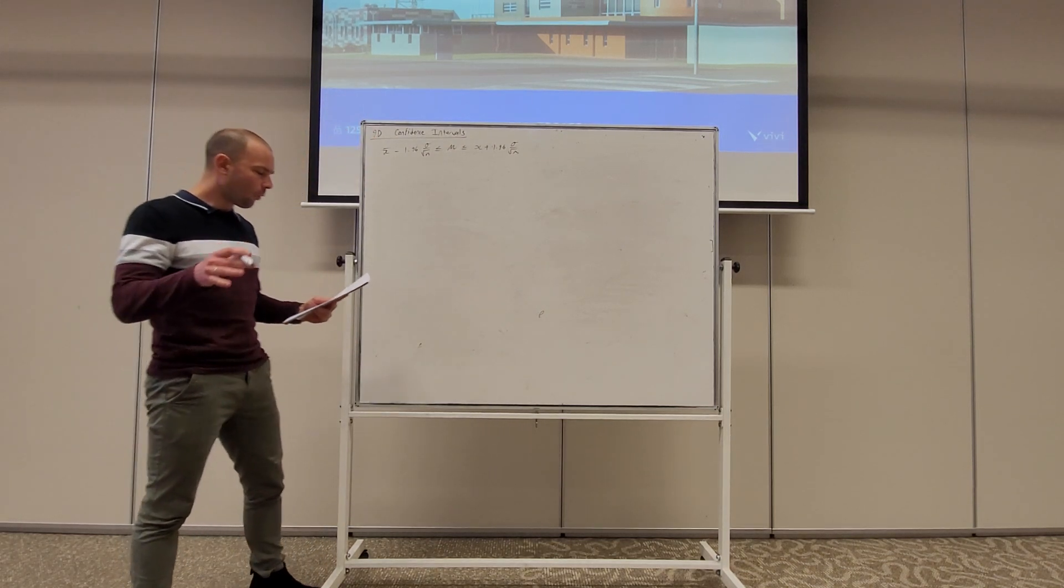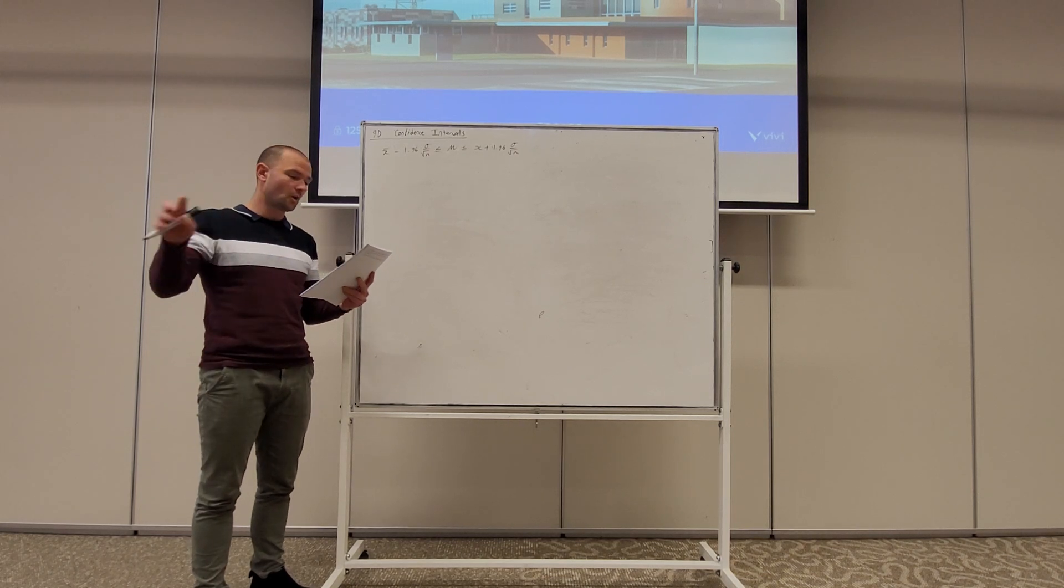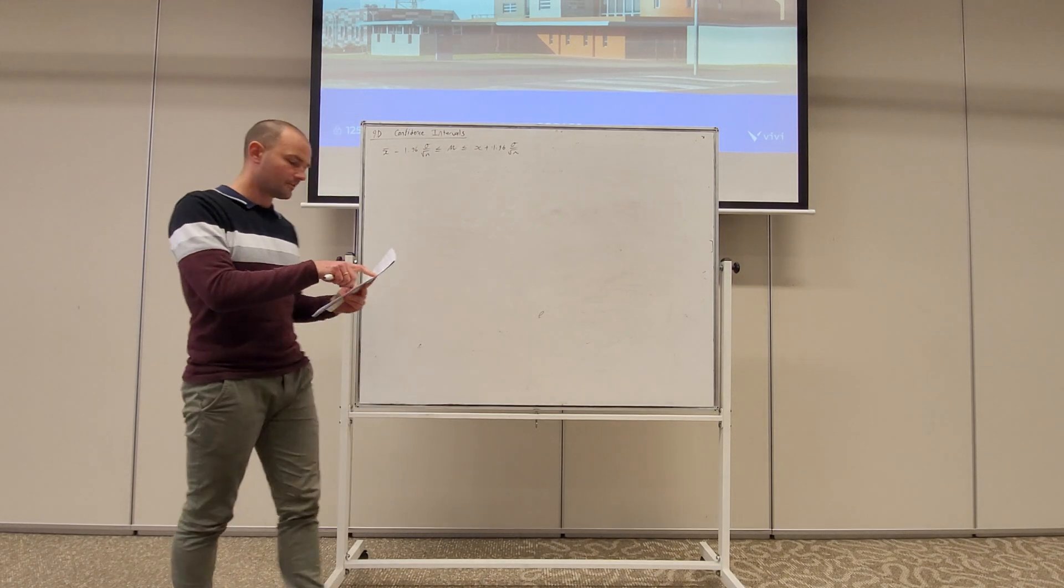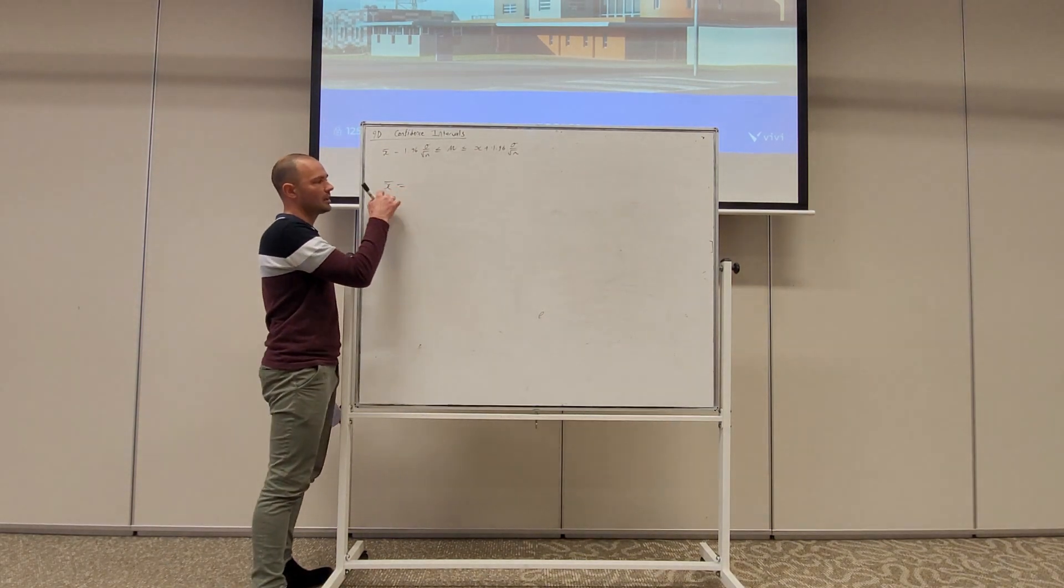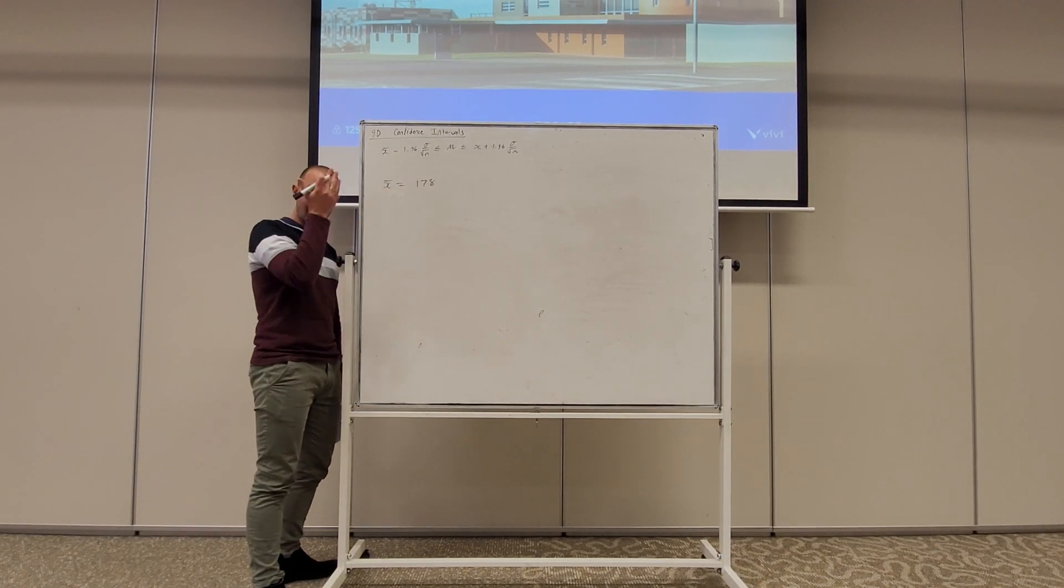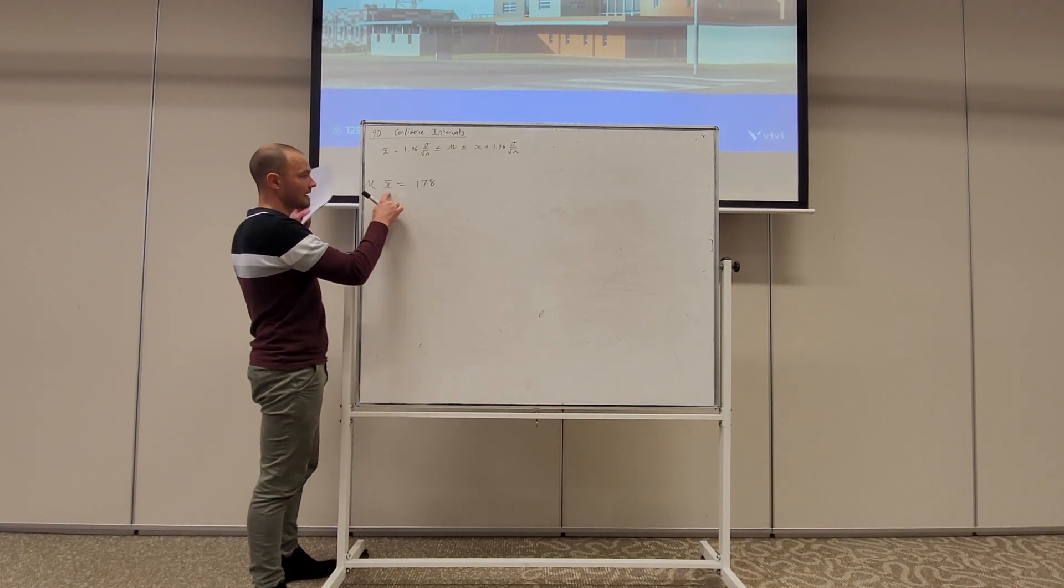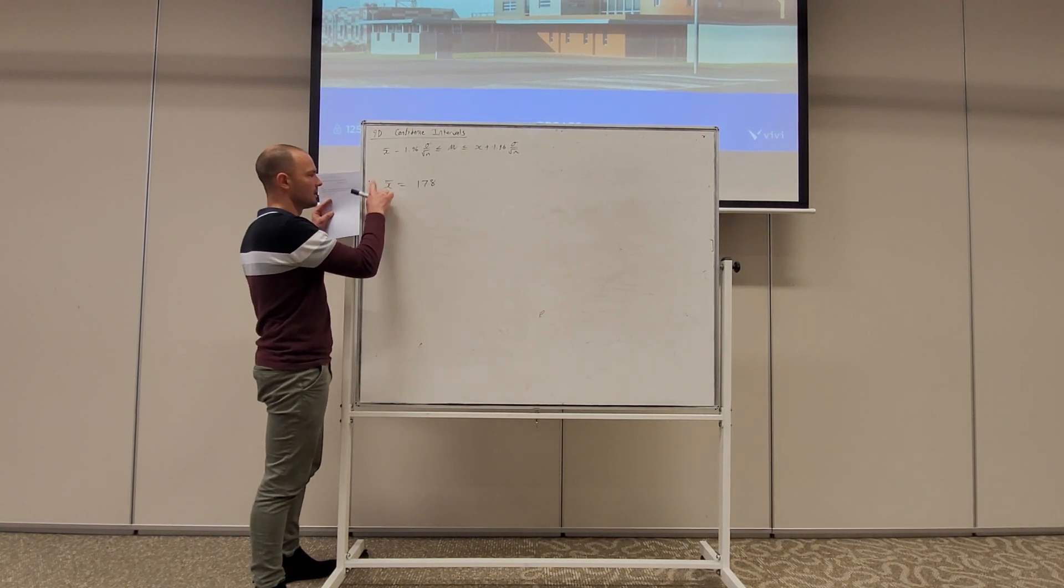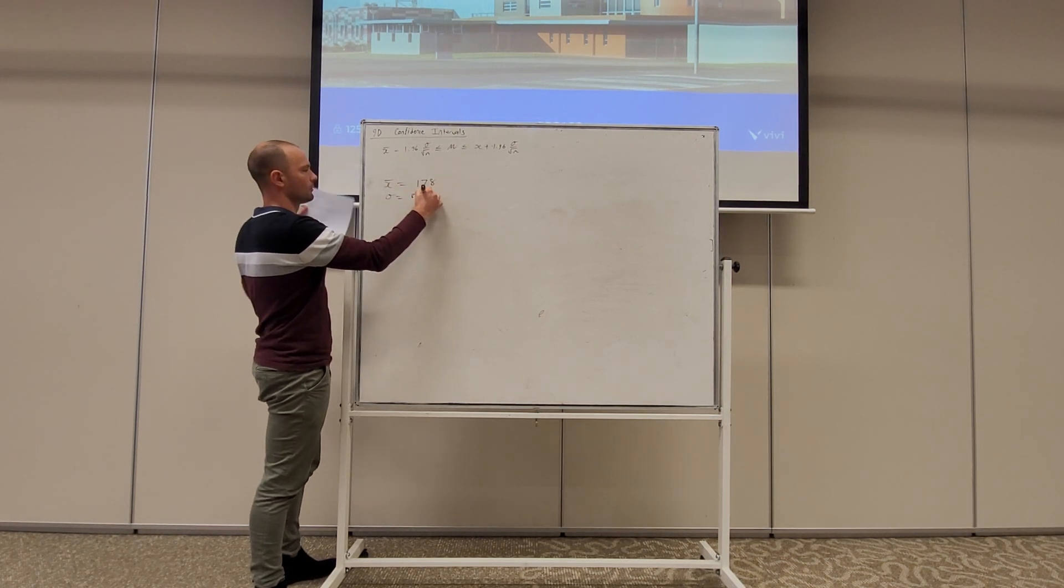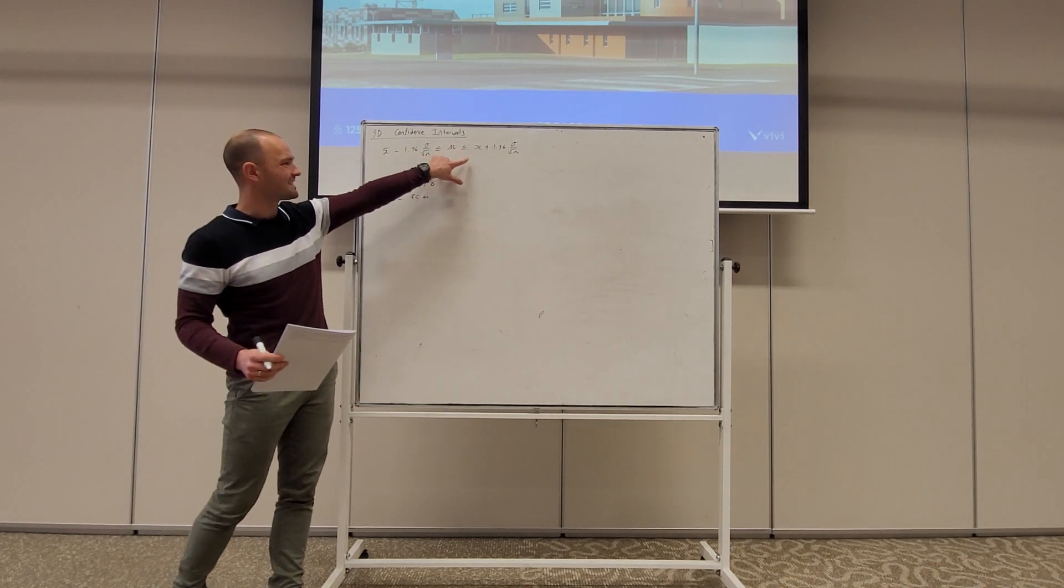So in our example we have 40 year 12 students measured. So we have 40 of you guys measured. And we have an observed mean height of 178 centimeters. So just in terms of notation, lower x bar, that means the sample mean. And we contrast that with the population mean. That's the mean of the population of everyone. That's the mean of the sample of our 40. And our standard deviation was 8 centimeters and we sampled 40 people. So all we're going to do is chuck the information that we have into this formula.